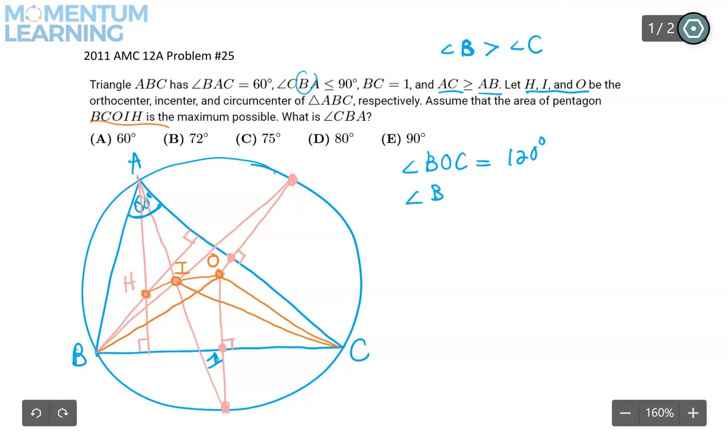So therefore BOC must be 120 degrees. Now, the second angle I'm considering is angle BIC. Angle BIC, this is a very well-known result. It's just 90 degrees plus angle A over 2. Because angle A in our case is a 60 degree angle. So that would be 120 degrees as well. Now, that's a strange thing. So that tells us that quadrilateral BOIC is cyclic.